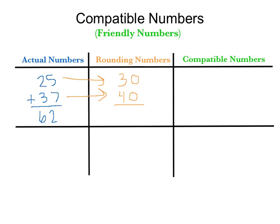So then if we get that total, 30 plus 40 equals 70. Which is still estimating, it's still very close to the answer, but with compatible numbers, it's going to give us a chance to get a little bit closer.